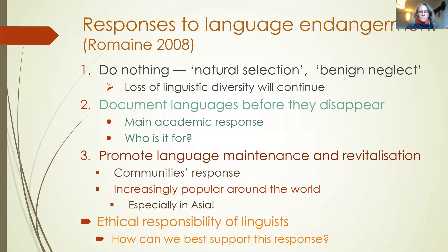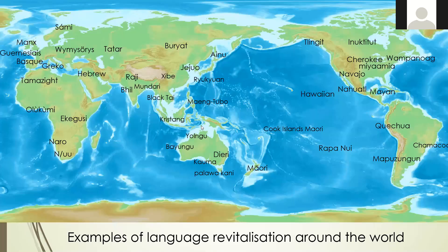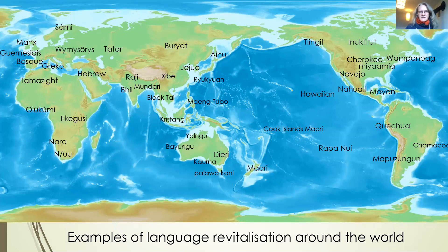That leads us to the question of how we can best support this response — what are the best solutions we might apply? Are there common patterns around the world that might be helpful? Here's a map of a few language revitalization activities around the world. I chose this map because it focuses on Asia and the Pacific, where several well-known language revitalization movements such as Hawaiian and Maori are based. I also wanted to challenge the Eurocentric view of the world.